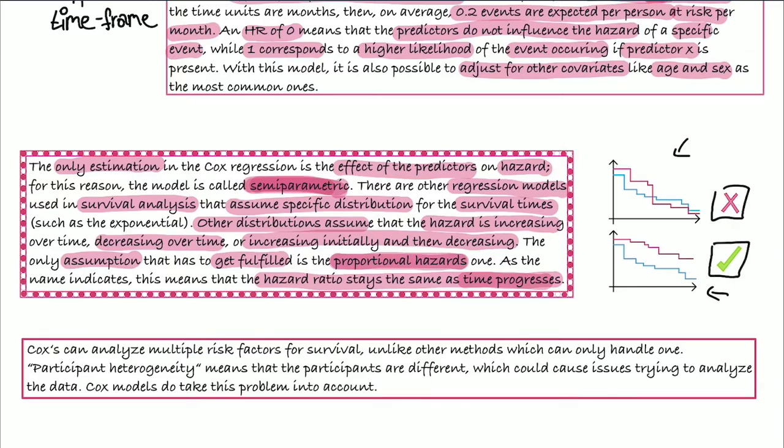And there is another point here which is participant heterogeneity, which means that the participants are different. And this can cause issues when we are trying to analyze the data. So the participants' values might differ when we are taking a look at different time points, for example in the morning or in the evening. And Cox models do take this problem into account, which can be seen as another advantage.